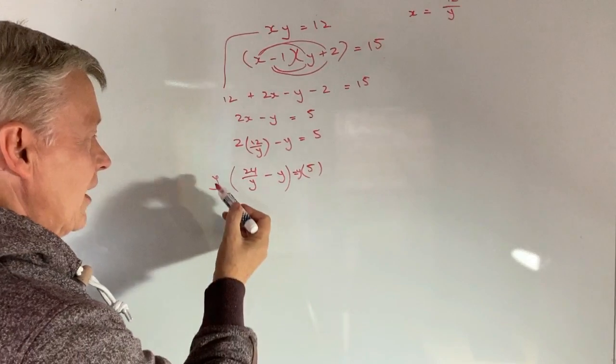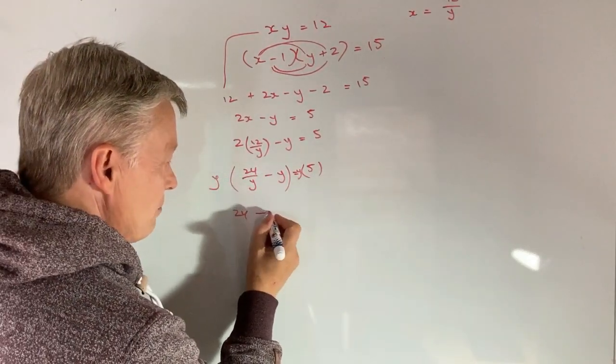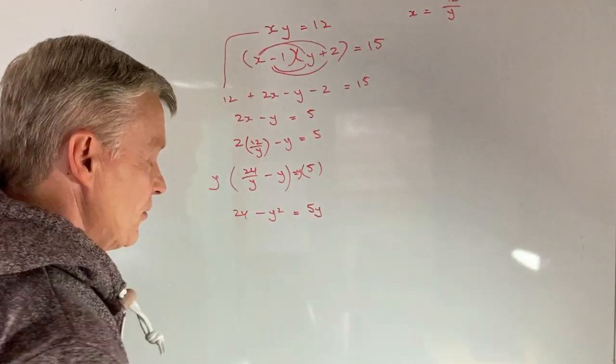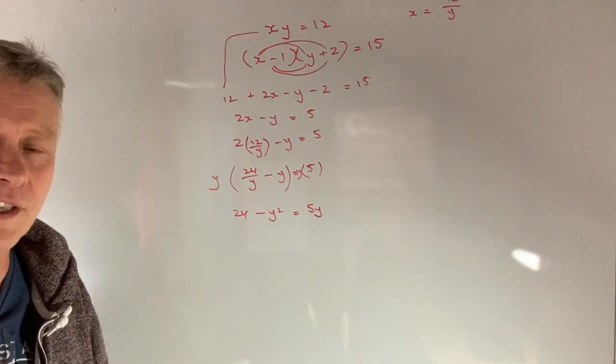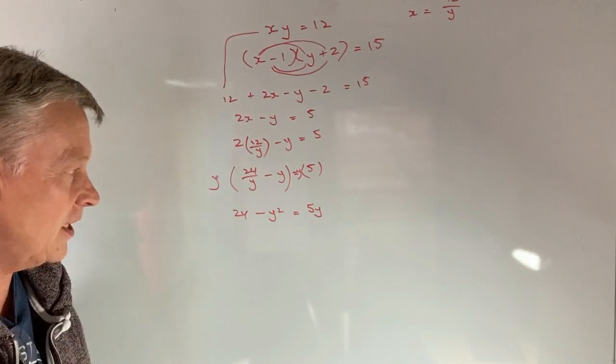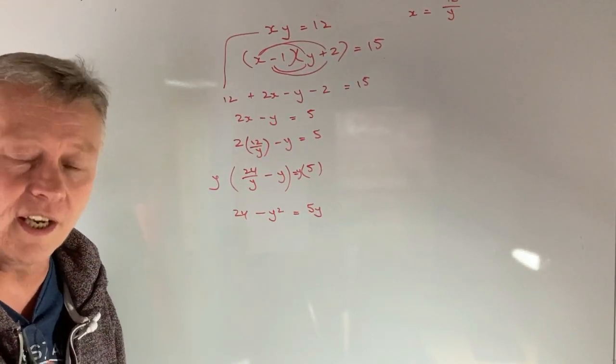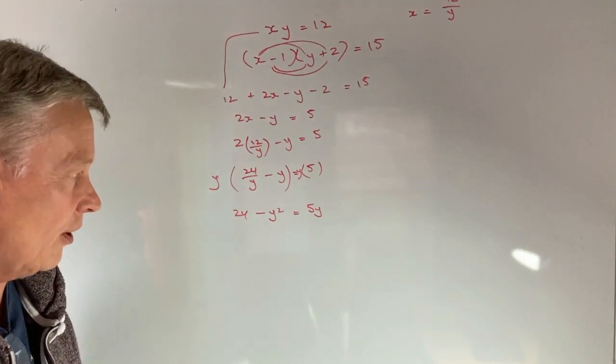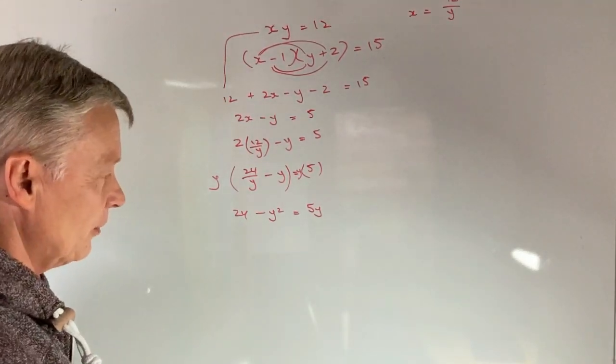Here's your problem. This denominator of y, we've got to get rid of. The way of doing that is to multiply both sides by y. Because if we multiply 24 over y by y, we just get 24. So that gets rid of that denominator and makes it much easier for us.